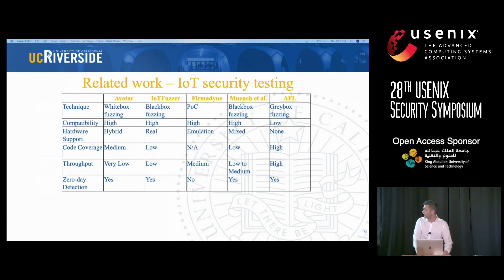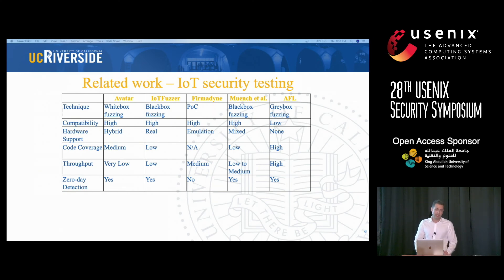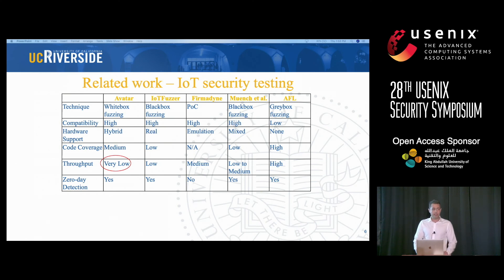Let's take a look at the related work. The first work is Avatar, which follows a hybrid approach. It emulates the program until there is a hardware request, and in such cases it forwards the request to real hardware. Because it uses real hardware, it has a low throughput. The second work is IoT fuzzers, which basically execute on real hardware. Because of that, it again has a low throughput. Further, since their fuzzing is a black box approach, it has a low code coverage.